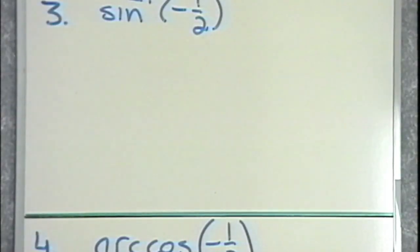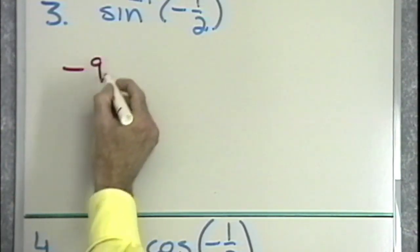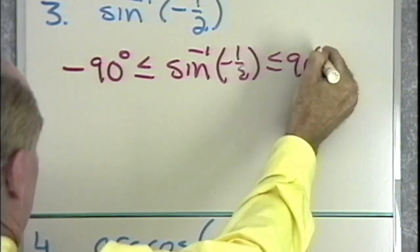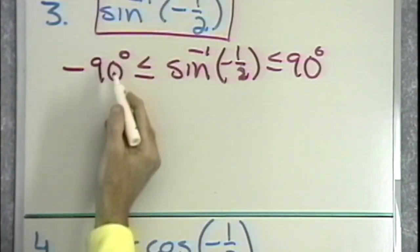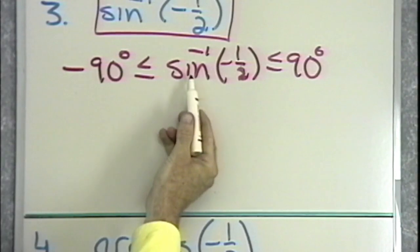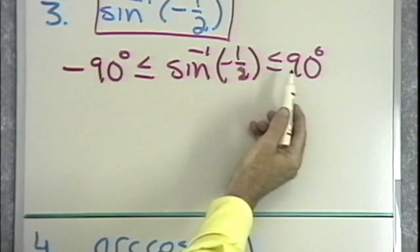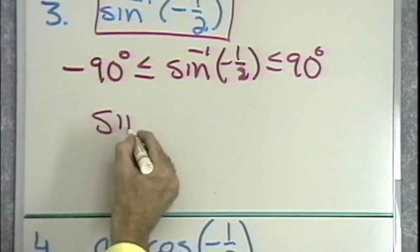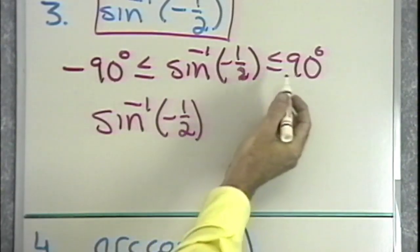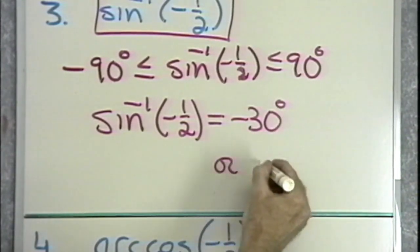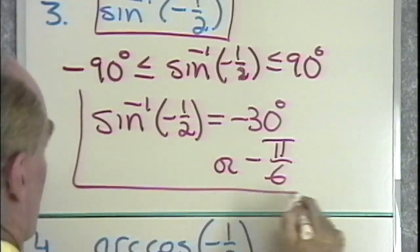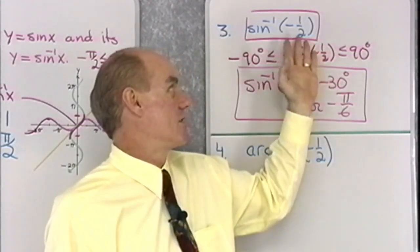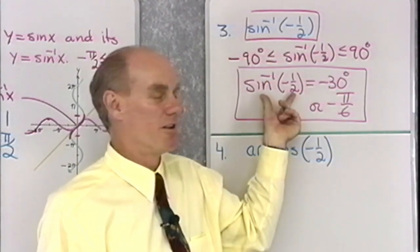For problem number 3, we want to find the inverse sine of negative 1 half. The restriction is negative 90 degrees less than or equal to the inverse sine of negative 1 half less than or equal to 90 degrees. So I'm looking for the angle between negative 90 and positive 90 whose sine is negative 1 half. The sine is negative only in quadrant 4 between negative 90 and 90. The reference angle would be 30, so the angle in quadrant 4 is negative 30 degrees, or negative pi over 6. If you put negative 0.5 into your calculator and press inverse sine, you'll get negative 30 degrees.